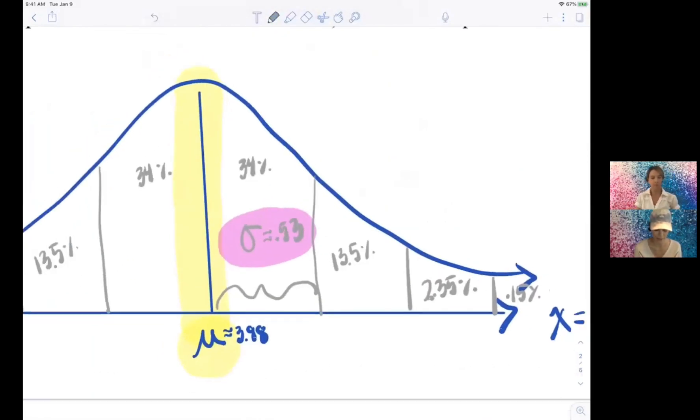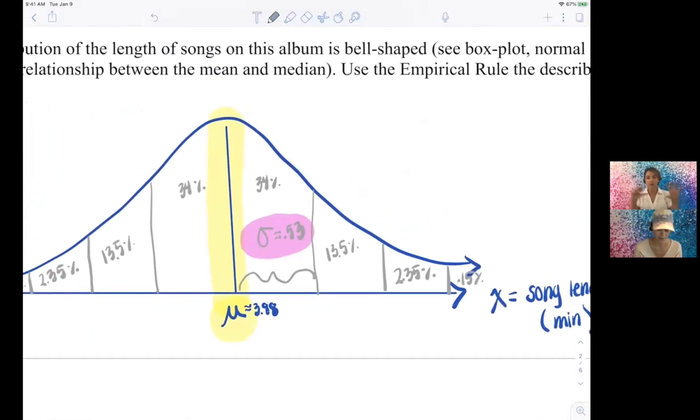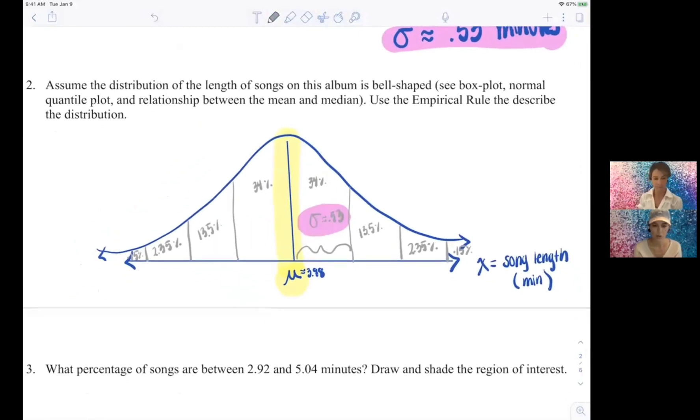And then what was the standard deviation? Our standard deviation was 0.53. So to label that next bar there, we've got to take 3.98 and add 0.53, right. Let's get some like, you always want to get the bones of your graph by labeling along the horizontal. Tell me with the calculation.